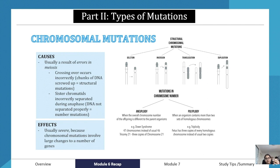There are four types of structural chromosomal mutations. Deletion is when a chunk of the chromosome has been deleted. Inversion is when a part of the DNA has been inverted inside out. Translocation is when a part of the chromosome has been displaced. Finally, duplication is where a part of the chromosome has been duplicated.